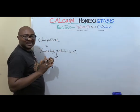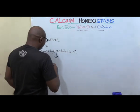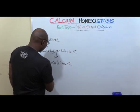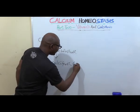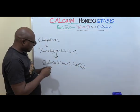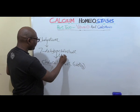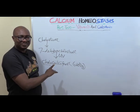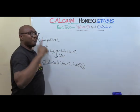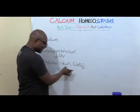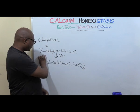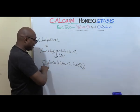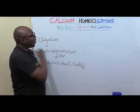You also have ergocalciferol, which is from plants. But the one that we have is called D3 — cholecalciferol. So, UV rays convert 7-dehydrocholesterol to cholecalciferol. Now we have cholecalciferol — this is the inactive form. It needs to be activated into the hormonal form. This is the form you can take in your meal as a micronutrient, and also the form produced when UV rays act on cholesterol under the skin.